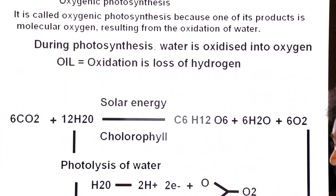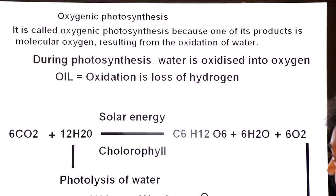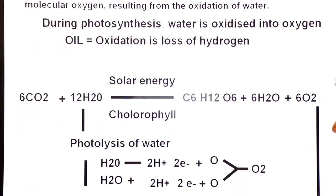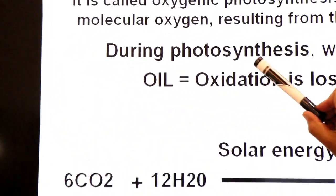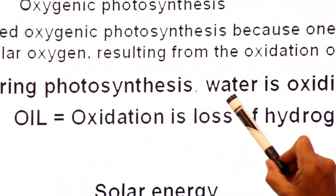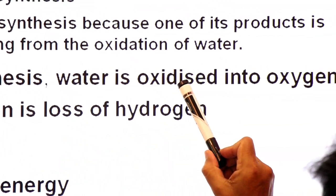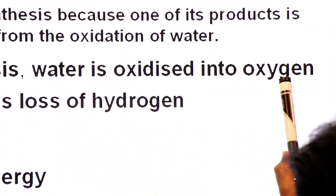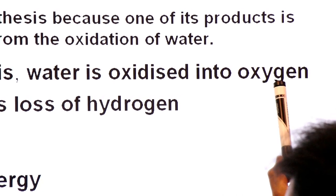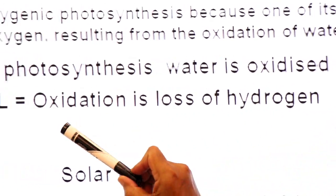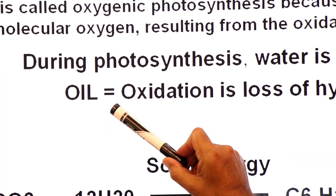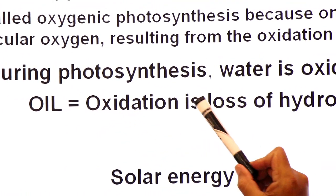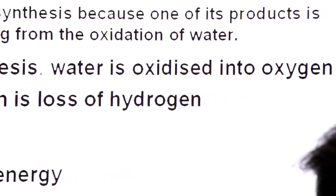During photosynthesis, water is oxidized into oxygen. The short form for oxidation is OIL — oxidation is loss of hydrogen. So water loses hydrogen and becomes oxygen.